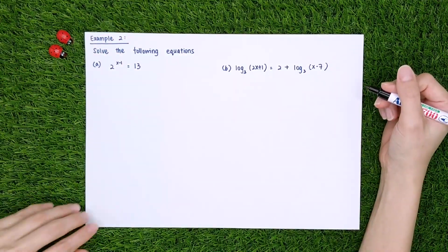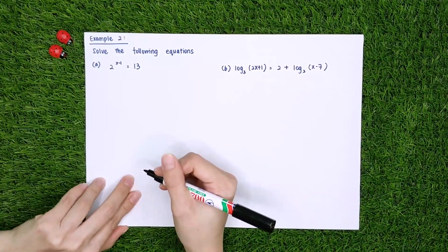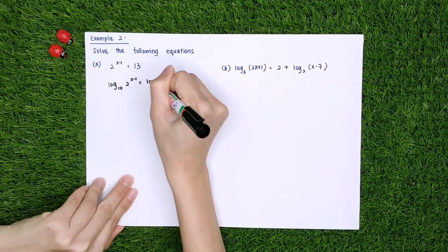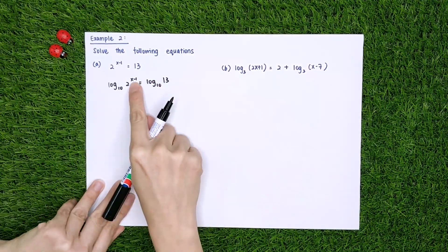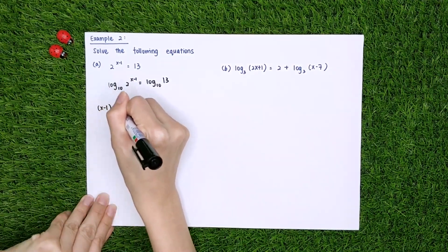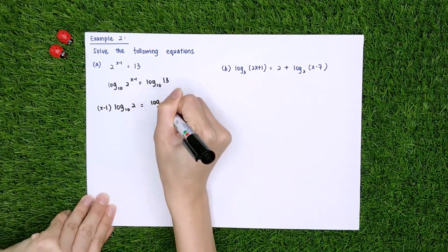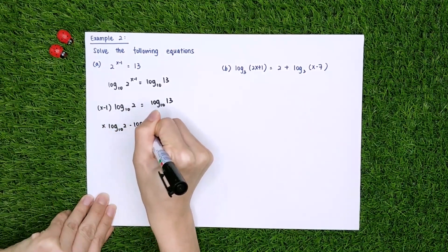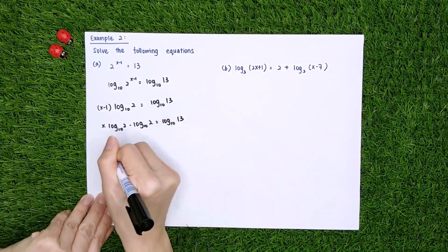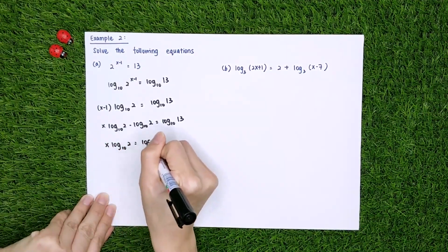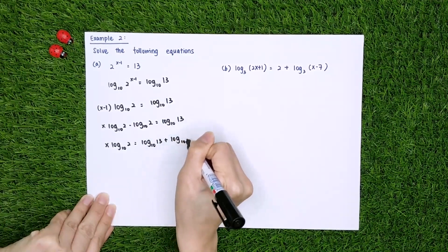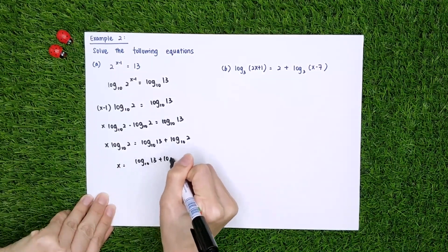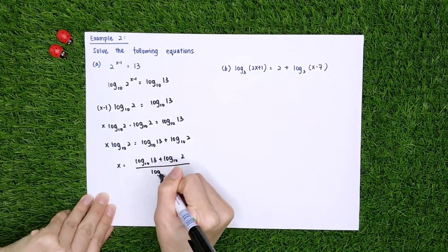Example 2: solve the following equations. Part A: 2^(x-1) = 13. Take log base 10 of both sides. Then (x-1) log_10(2) = log_10(13). Expand: x·log_10(2) - log_10(2) = log_10(13). Move log_10(2) to the right: x·log_10(2) = log_10(13) + log_10(2). So x = [log_10(13) + log_10(2)] / log_10(2). Using a calculator, x ≈ 4.7.